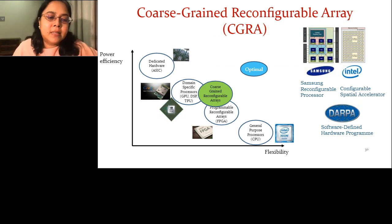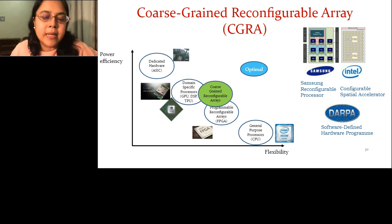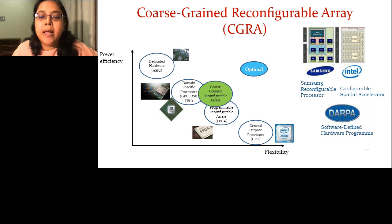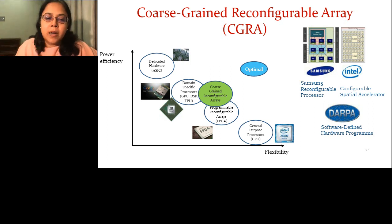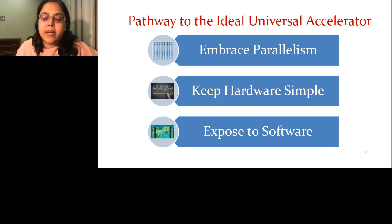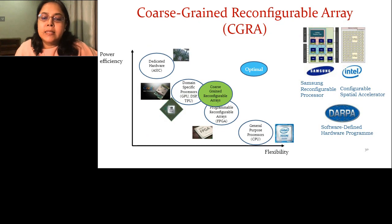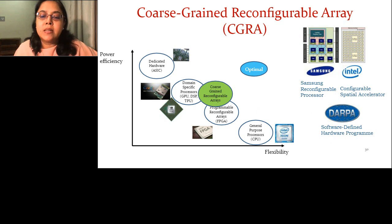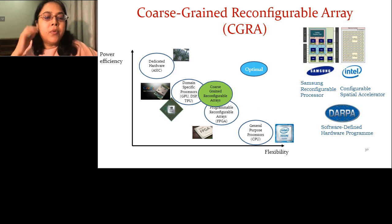One promising approach is known as the Coarse-Grained Reconfigurable Array or CGRA. There are various commercial offerings: Samsung has a CGRA in all its mobile application processors called the Samsung Reconfigurable Processor or SRP. Intel has patents on what is known as the Configurable Spatial Accelerator or CSA. DARPA has a large program on software-defined hardware, which is essentially equivalent to coarse-grained reconfigurable arrays.